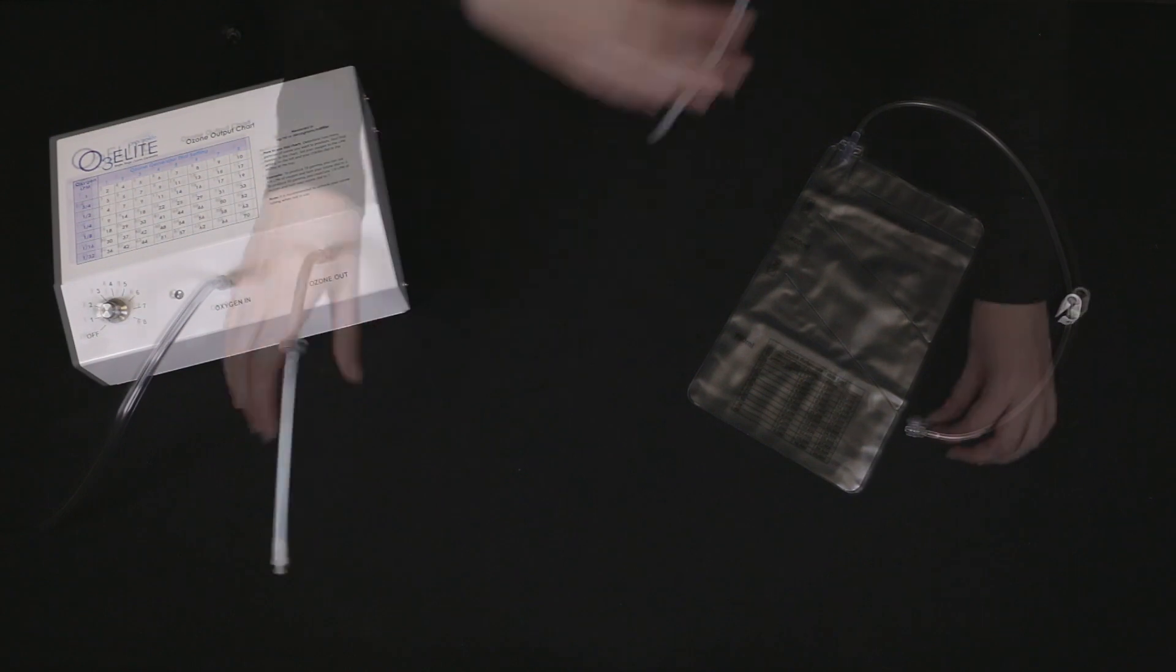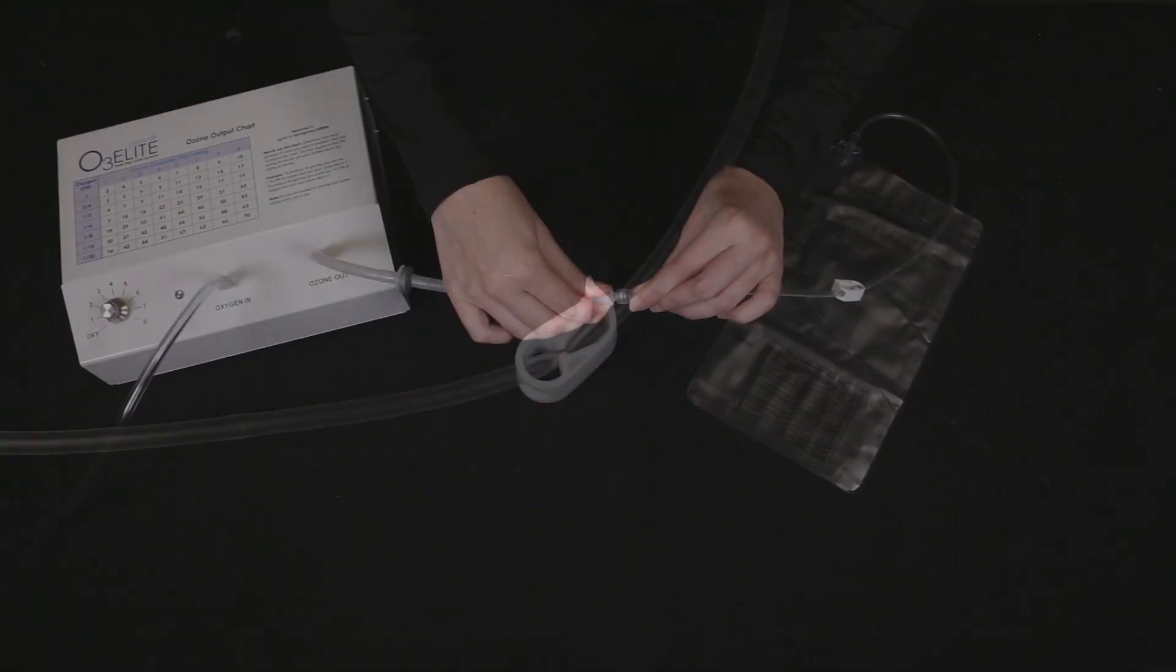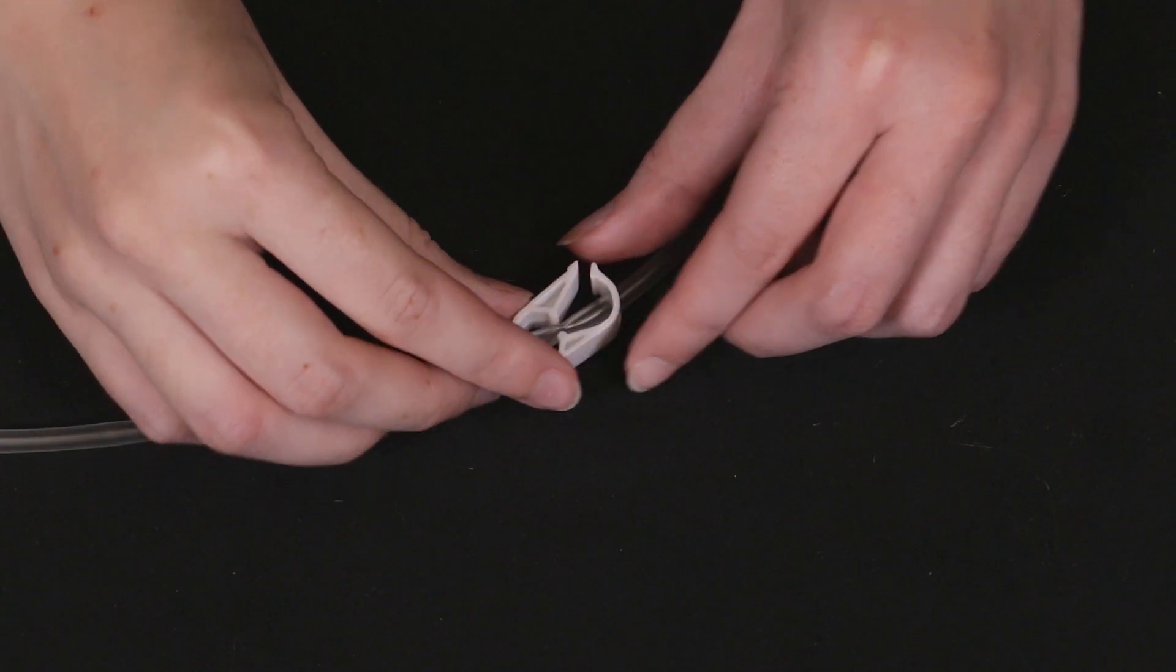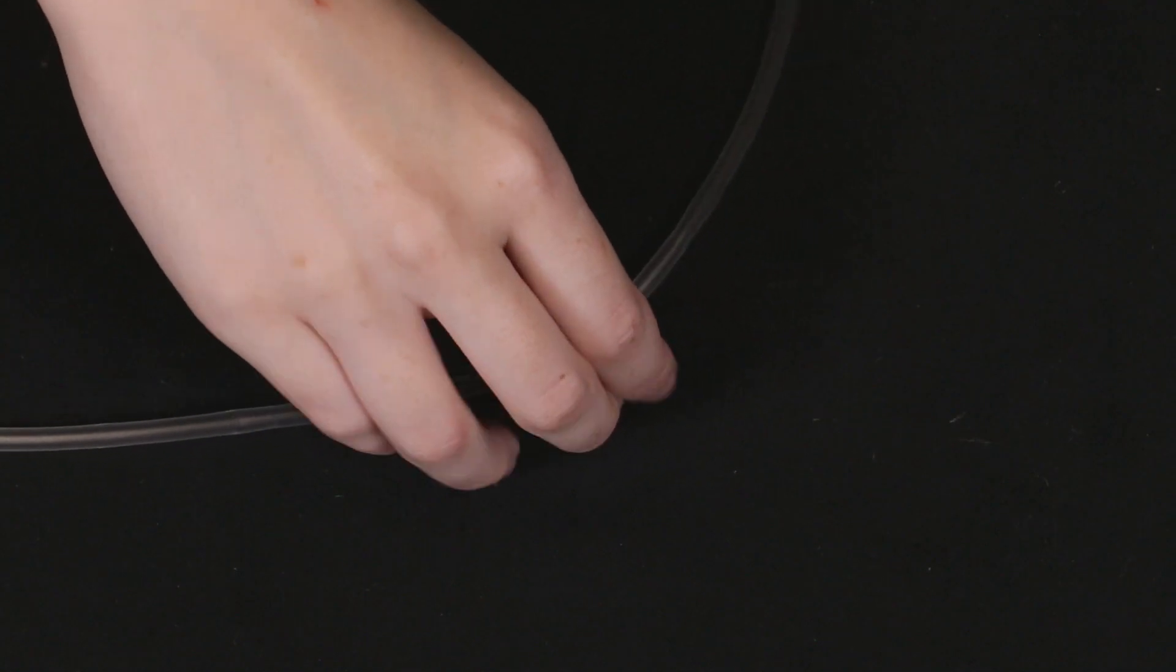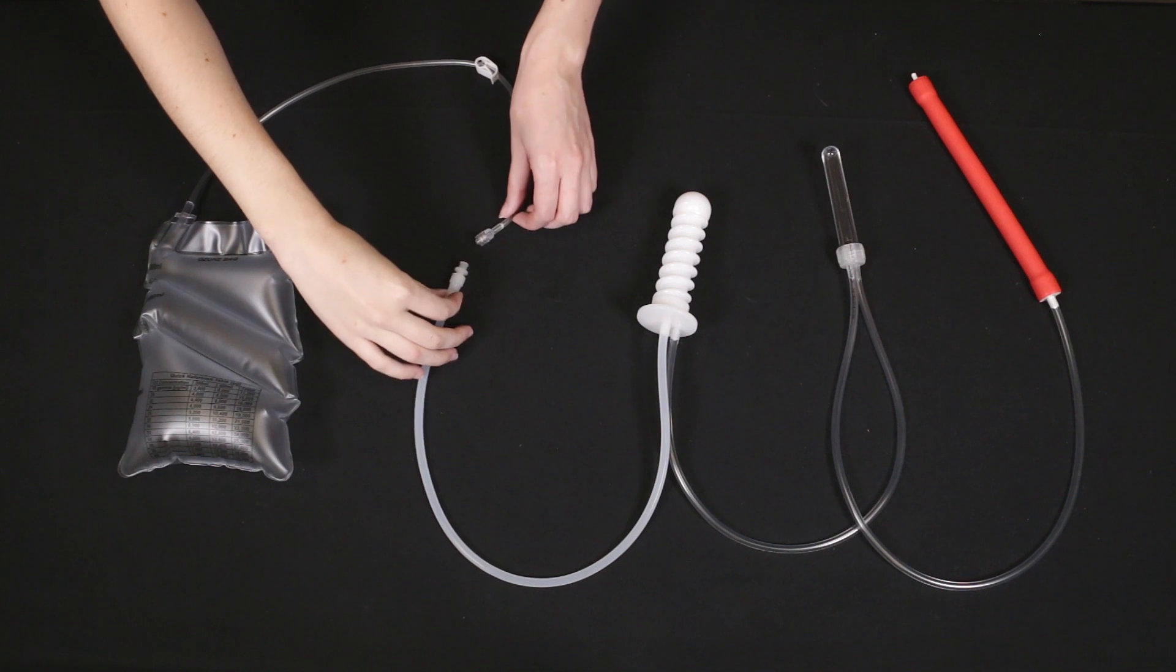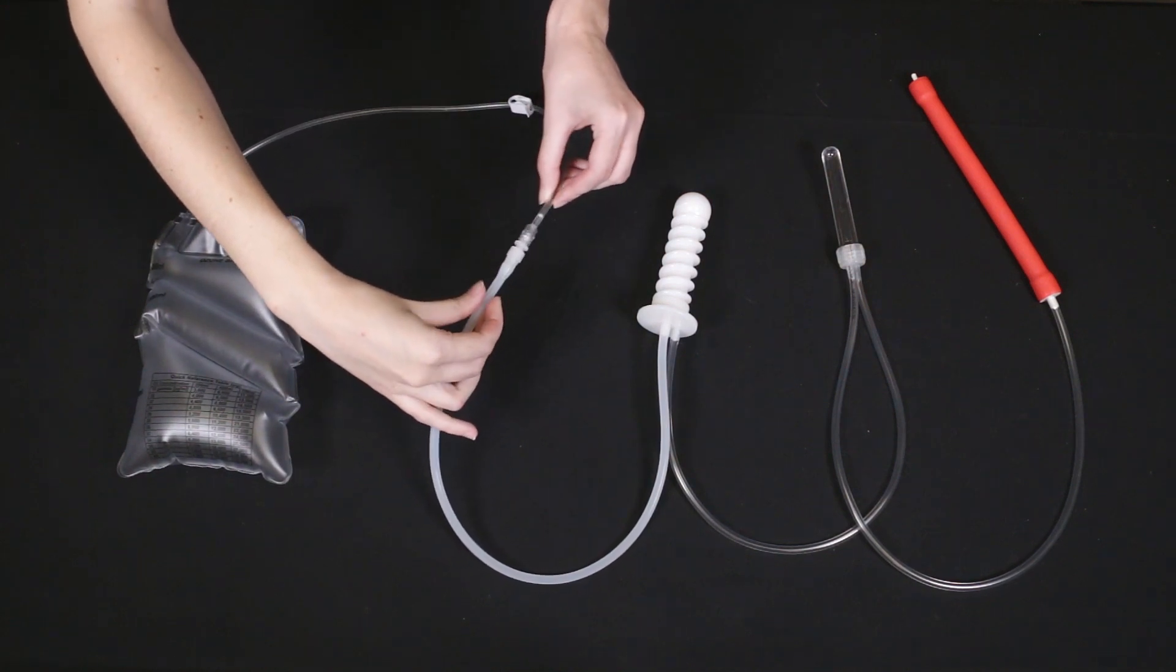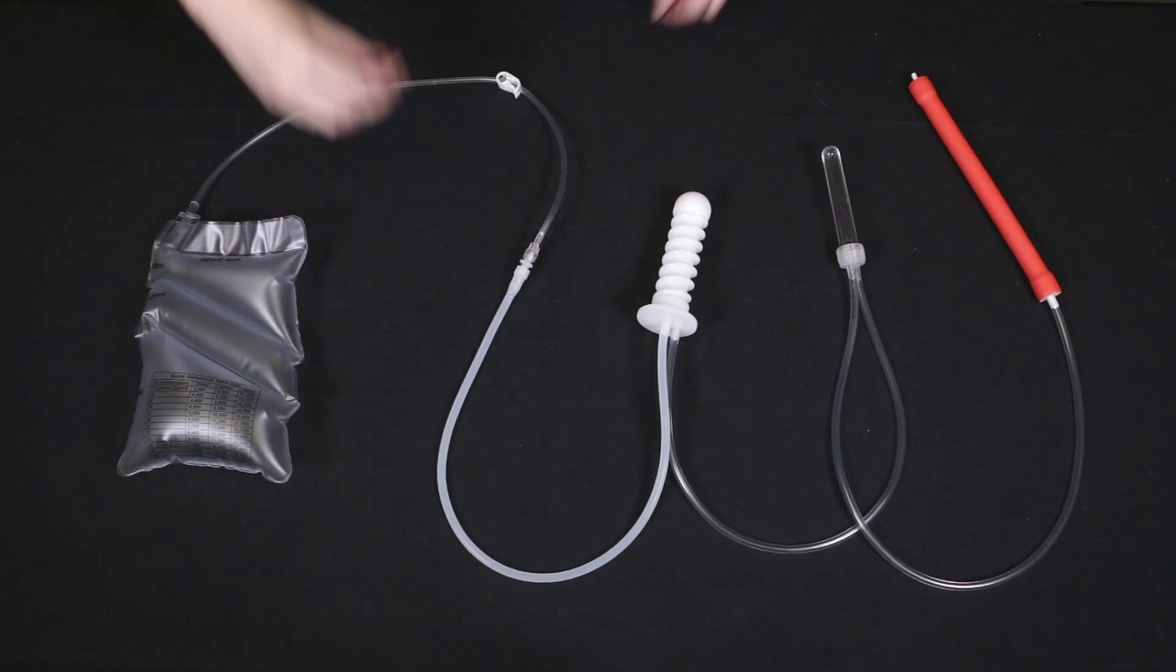To use the kit with an insufflation bag, connect the bag to the tubing connected to your ozone generator. Make sure the clamp on the bag is open to allow the bag to fill. Fill the bag to the amount you prefer, then close the clamp and disconnect it from the ozone generator. You will now connect the bag to the silicone tubing coming out of the center of the probe. Once the probe is in place, open the bag's clamp and slowly squeeze the bag to administer ozone. This concludes how to connect and use the kit with an insufflation bag.